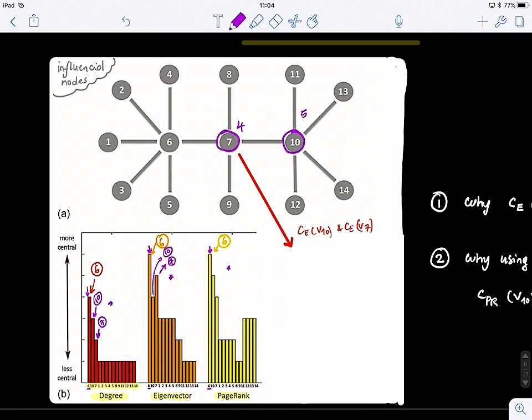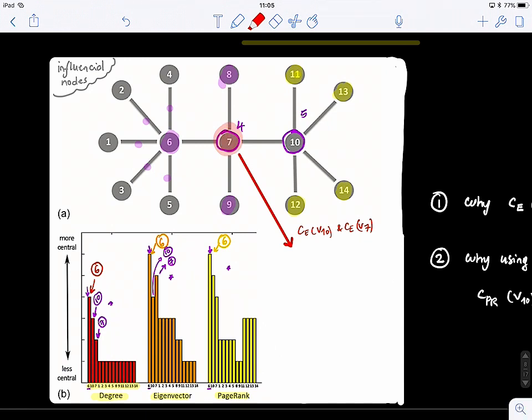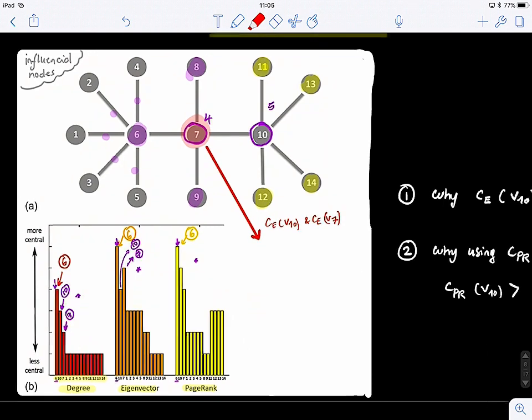But if you look at the degree of the neighbors, the degree of the neighbors, so this one is just one for all of them, but the neighbors of seven, so one, one, but this one has a degree of one, two, three, four, five, right? That is why, basically, when using eigenvector, we spot it, like seven actually was identified as more important than ten. But still, across all measures, we have six most important.